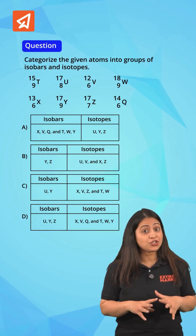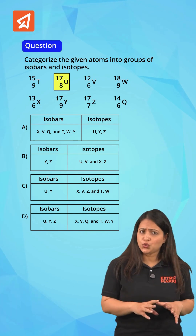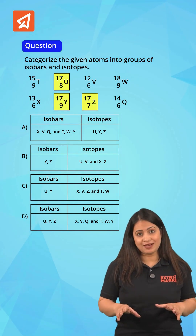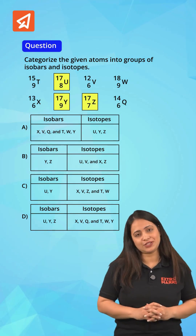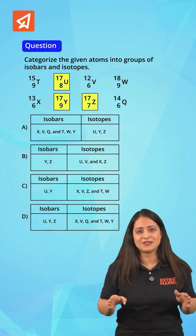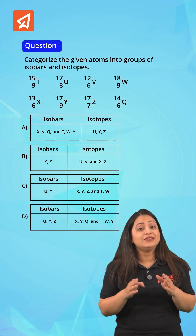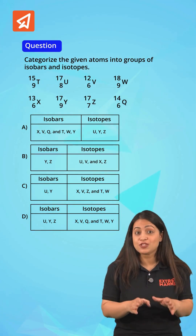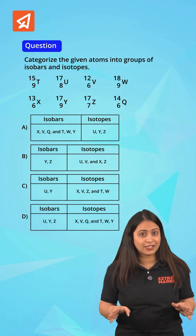In the mentioned question, U, Y, and Z all have different atomic numbers but their mass numbers are the same. Therefore, all three of them are isobars of each other.